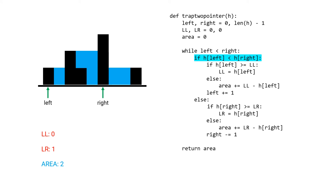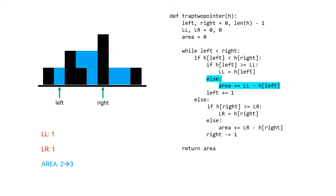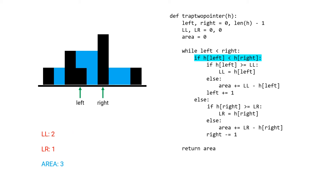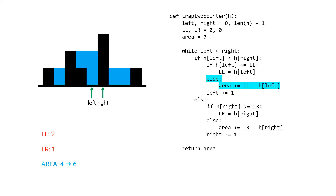Now left height is less than right height so we enter the if. The left height of 1 is larger than the current largest left of 0, so we update the largest left. Next, left height 0 is less than right height, so we enter the if again: height 0 is less than largest left 1, so we add 1 unit to the area (largest left 2 minus height 1 = 1). The left height of 2 is larger than the current largest left so we update it. Then left height 1 is less than largest left 2, so we add to area. Again left is less than right, and left height is less than largest left, so we add to area. Finally left moves on top of right, we exit the while loop and return the area of 6.